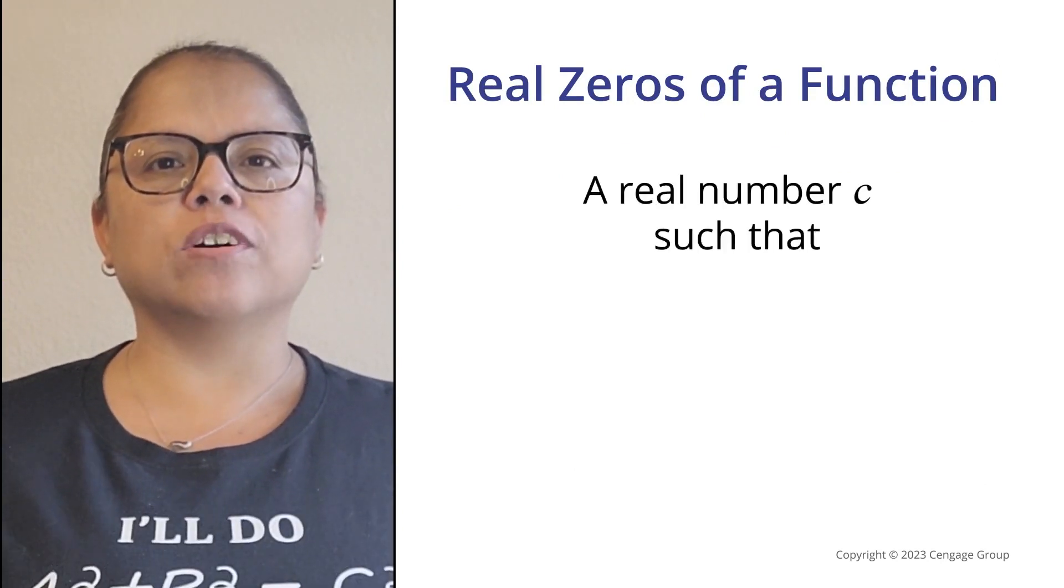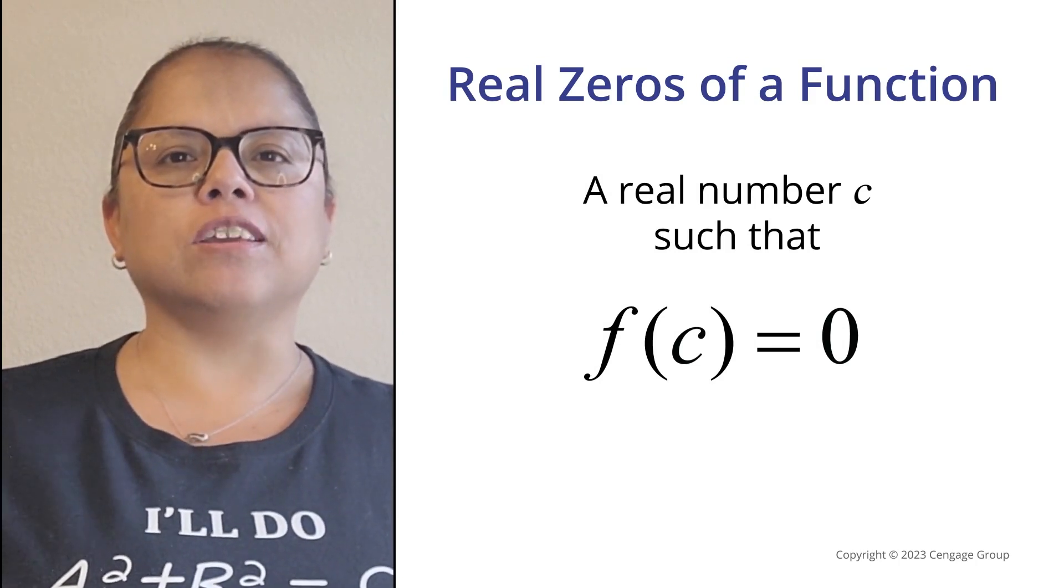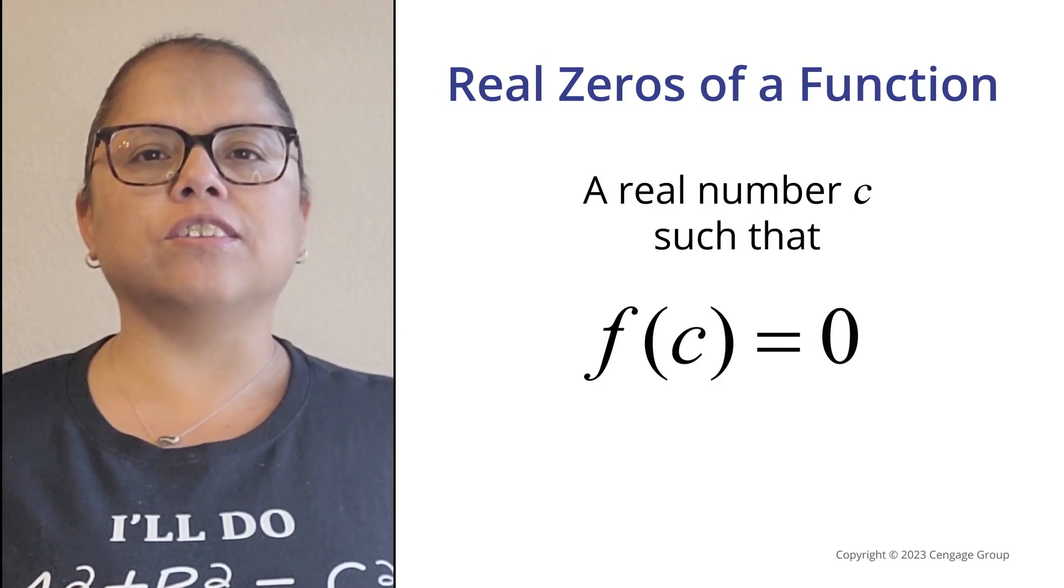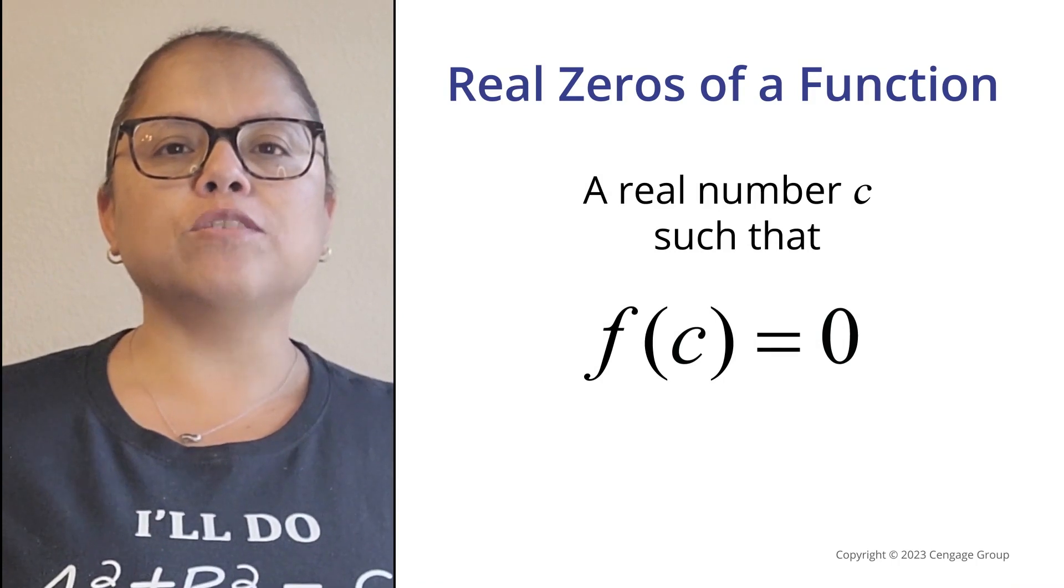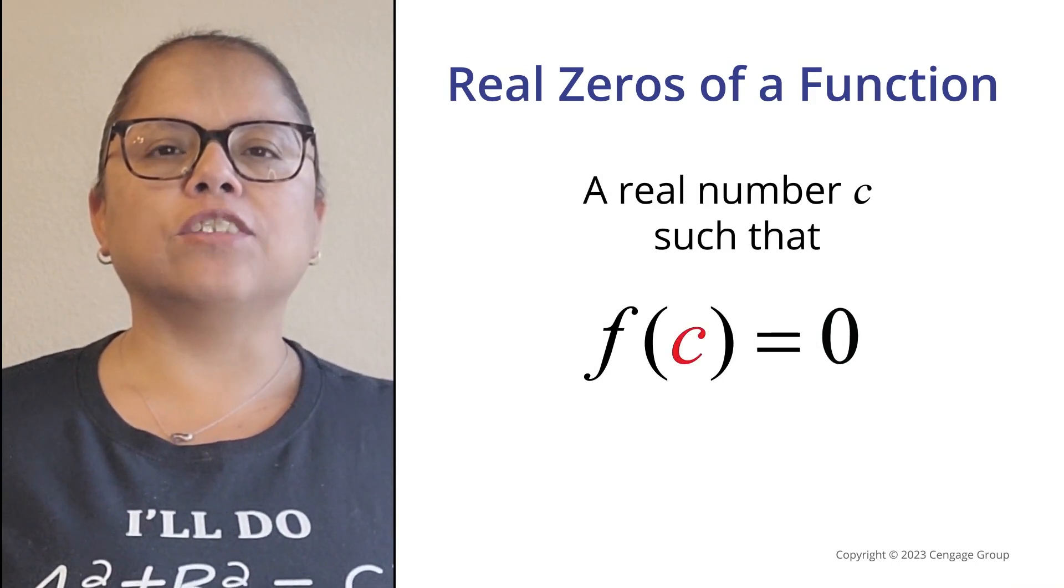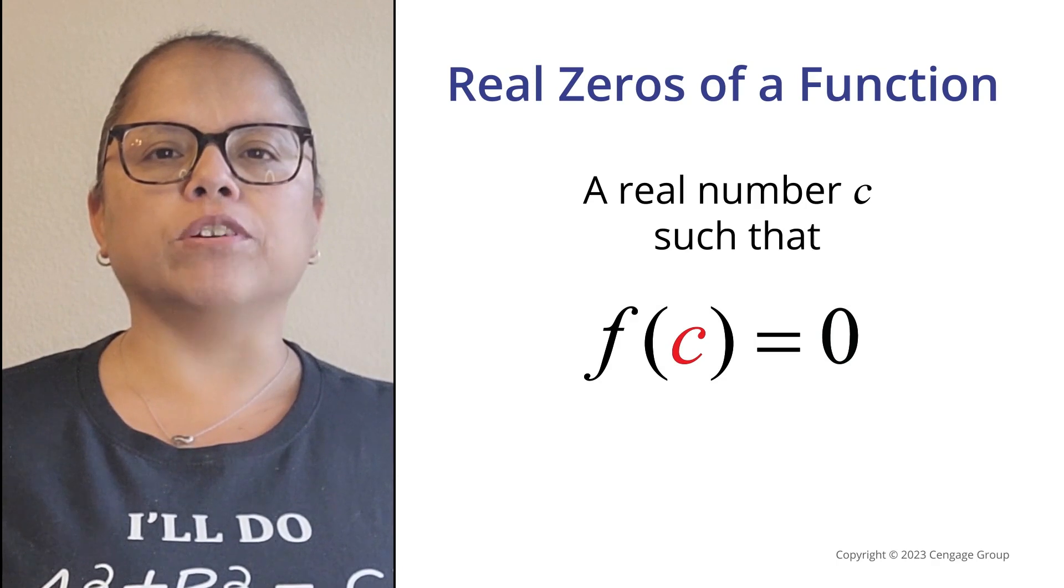A real zero of a polynomial function is a real number c, such that f equals zero. This means when we input the real number c into the function, the output is zero.